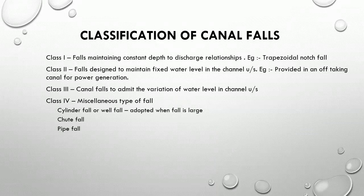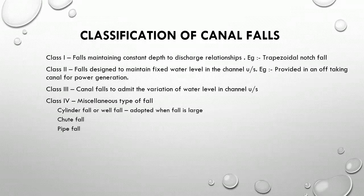The classification of canal falls is as follows. Class 1 is falls maintaining constant depth-to-discharge relationships; an example is the trapezoidal notch fall. Class 2 is falls designed to maintain a fixed water level in the channel upstream; they are provided in an off-taking canal for power generation. Class 3 is canal falls used to admit the variation of water level in the channel upstream. Class 4 is the miscellaneous type of fall; examples include cylinder fall or well fall, shoot fall, and pipe fall.